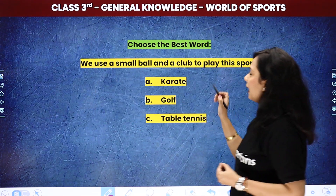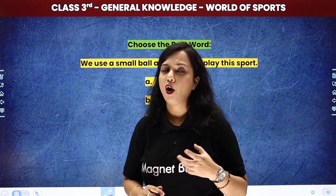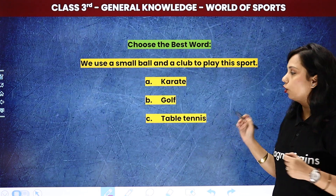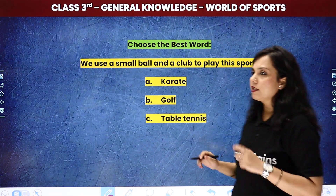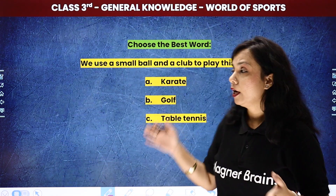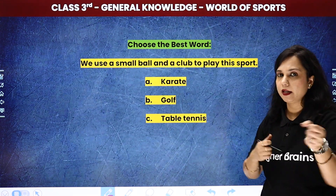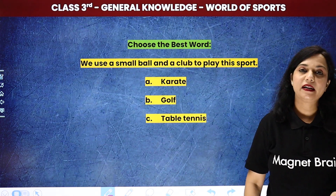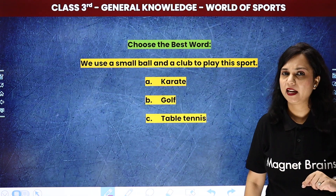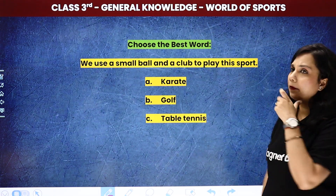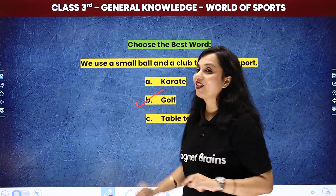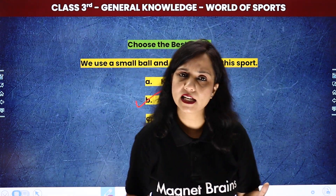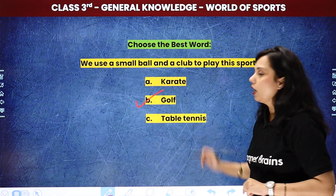Now, we use a small ball and a club to play this sport. The options are: A — karate, B — golf, C — table tennis. In karate there is no use of a ball — it's all hand-to-hand combat. In table tennis you don't need a club. So who needs a small ball and a club? The answer is golf. To play golf you need to join a club, and then you can practice. The right answer is B option — golf.